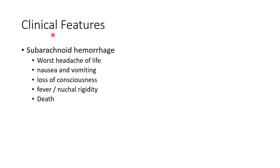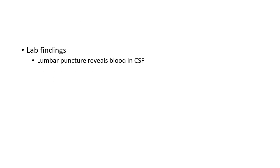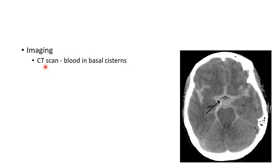Now let us see about the clinical features of subarachnoid hemorrhage. The patient describes it as the worst headache of his life. There will be nausea and vomiting, loss of consciousness, fever, and nuchal rigidity. It can be fatal also. In subarachnoid hemorrhage, lumbar puncture will reveal blood in cerebrospinal fluid. CT scan findings include blood in basal cisterns, as you can see in this picture showing blood in basal cisterns on CT scan of brain with subarachnoid hemorrhage.